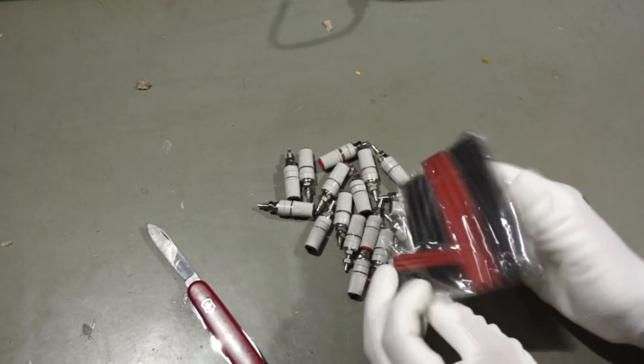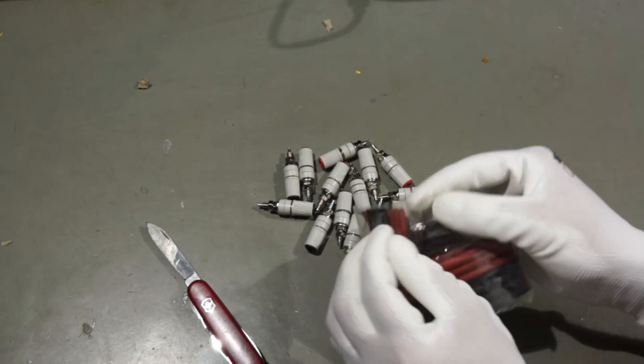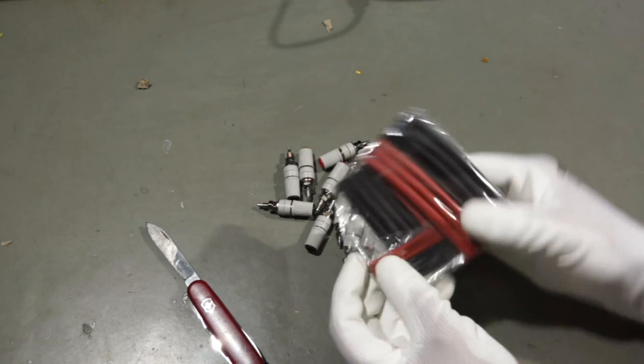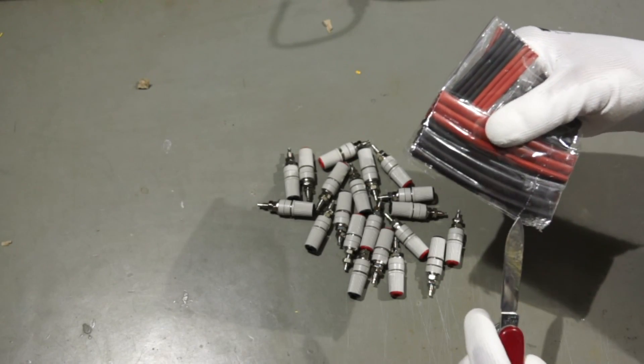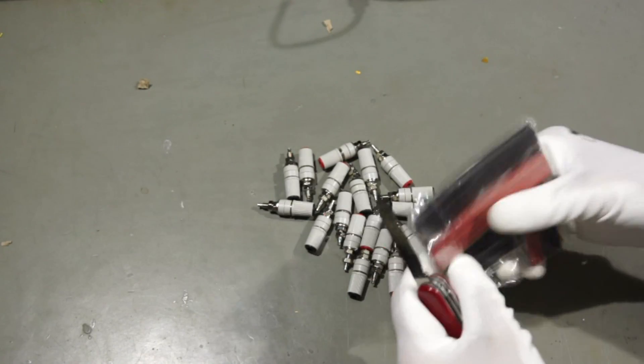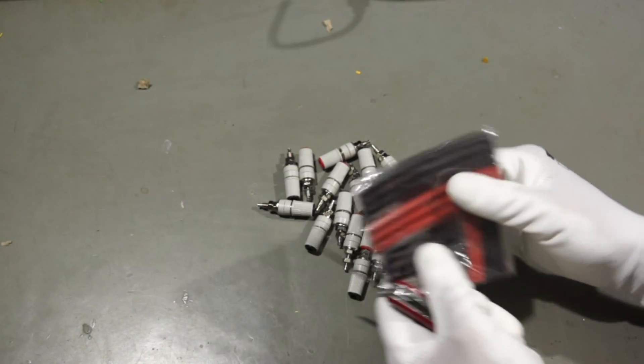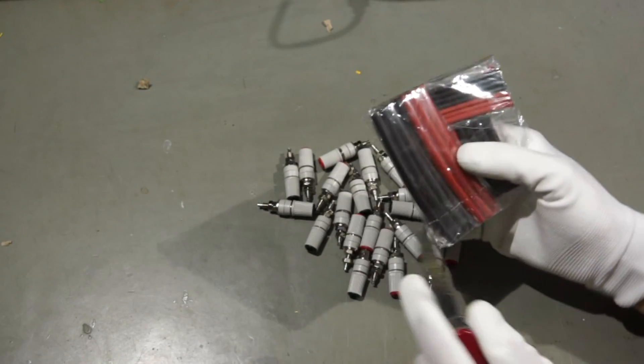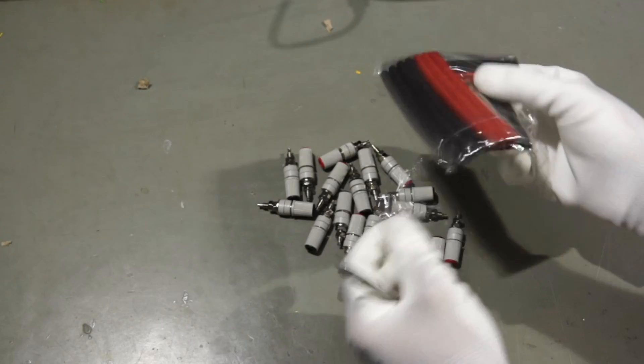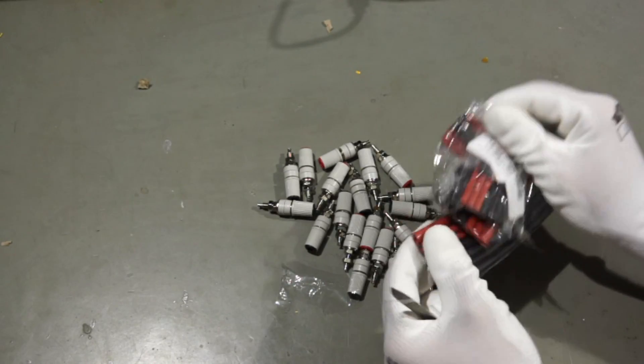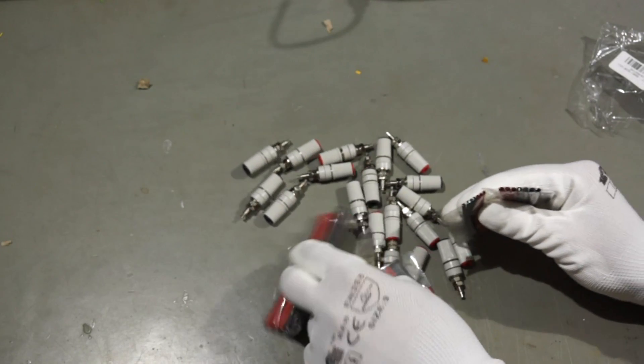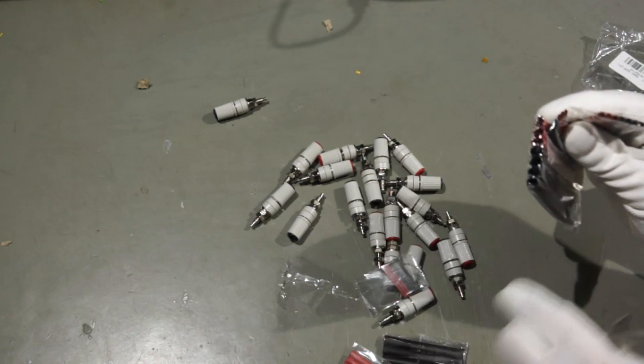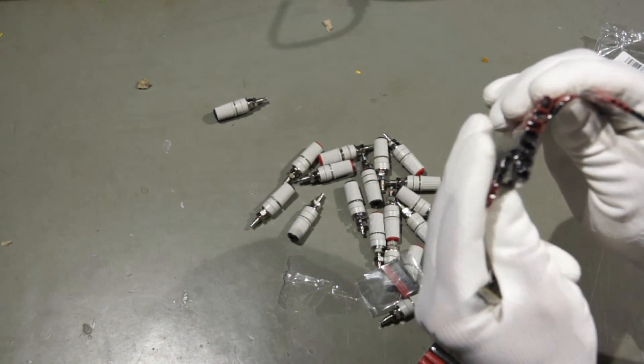And some heat shrink tubes. I have some heat shrink tubes but only black and transparent and I thought I just buy a small set of also red heat shrink tubes. So they come in all different sizes from smaller to bigger.